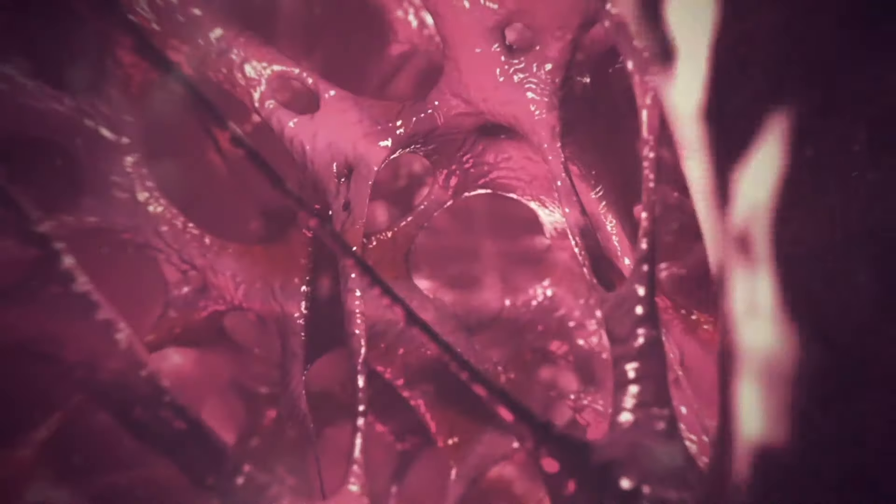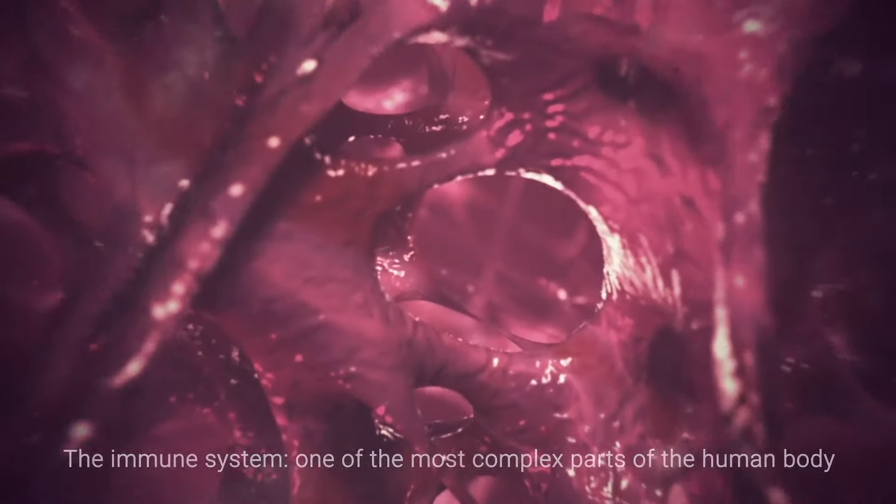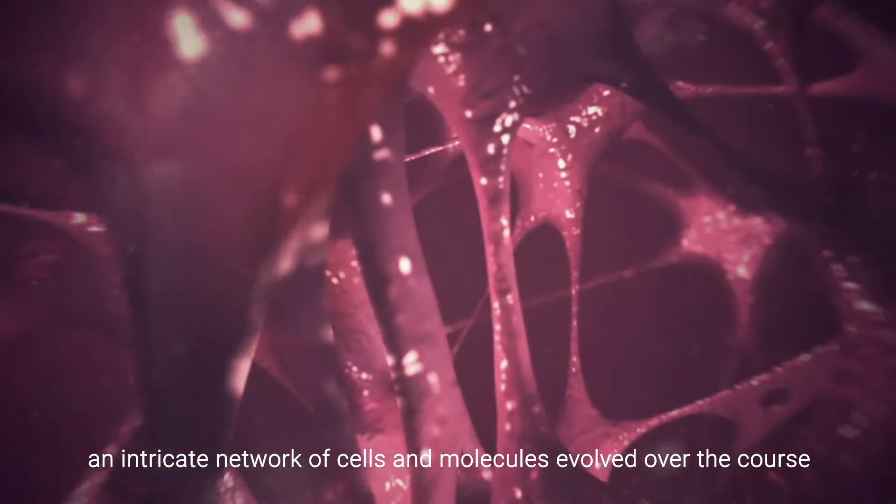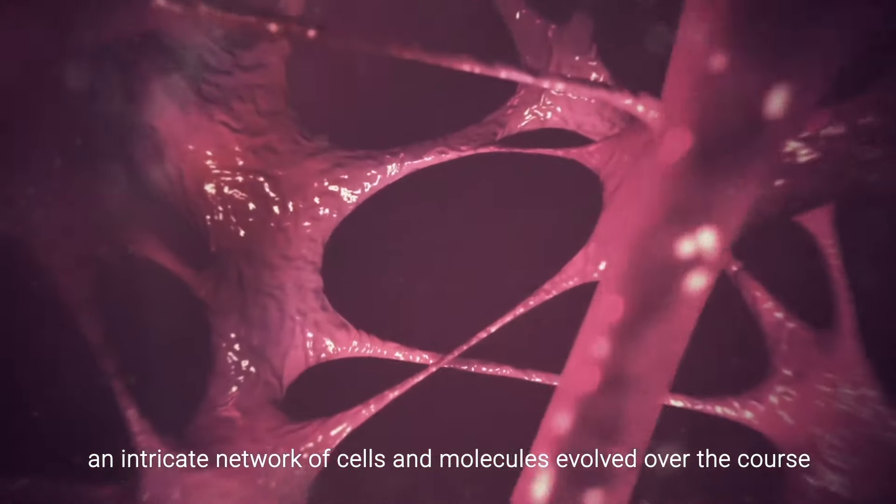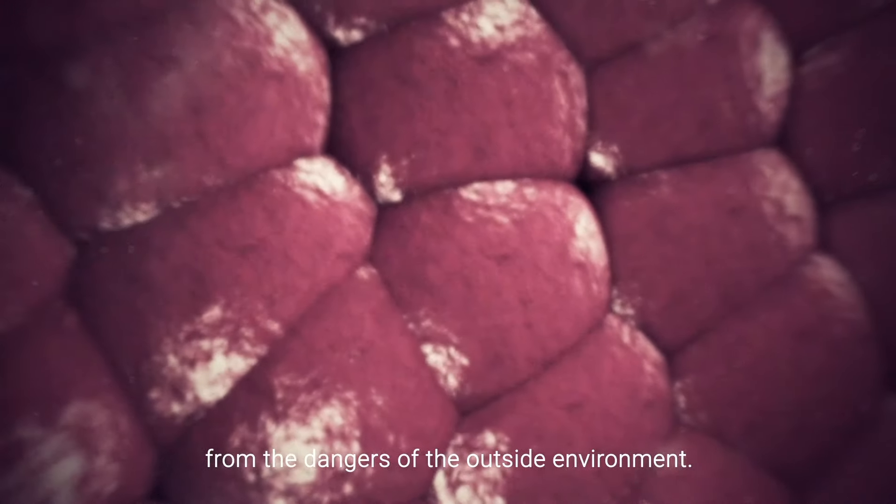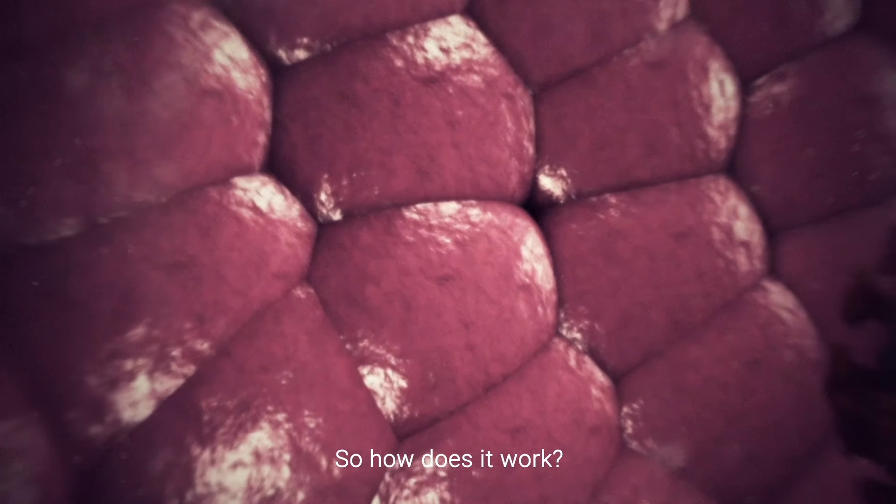Basics of the immune system. The immune system, one of the most complex parts of the human body. An intricate network of cells and molecules evolved over the course of hundreds of thousands of years to protect us from the dangers of the outside environment. So how does it work?